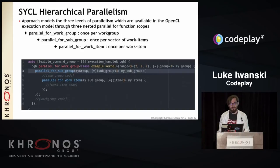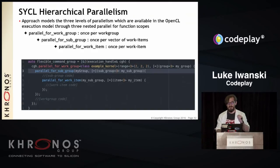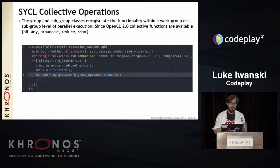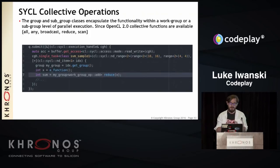Next is nested parallelism: you can enqueue sub-kernels from within a kernel. If a kernel runs on a GPU and wants to spawn subtasks on that GPU, those subtasks run asynchronously relative to the parent kernel, minimizing overhead. There's also SYCL hierarchical parallelism. parallel_for_work_group and parallel_for_work_item were in SYCL 1.2. SYCL 2.2 adds parallel_for_subgroups, which executes code once per vector of work items — a powerful tool.